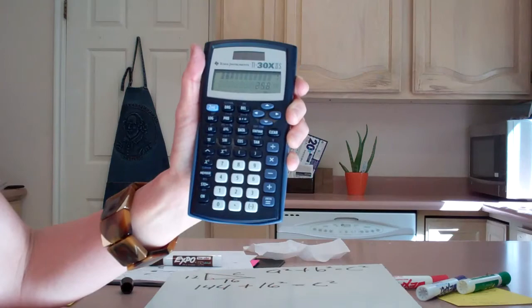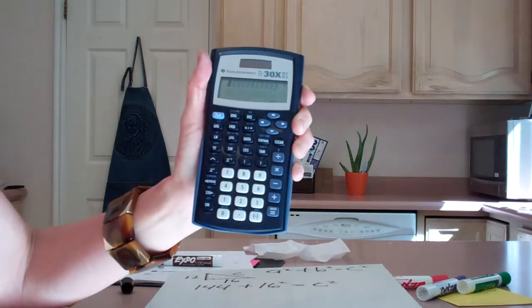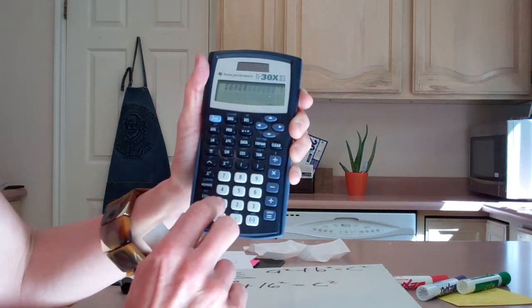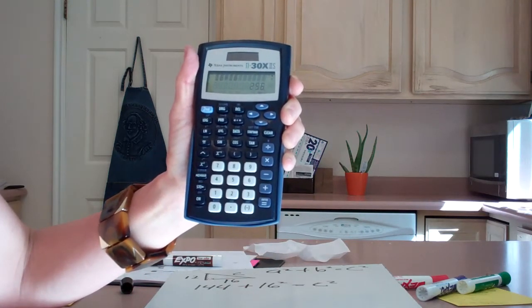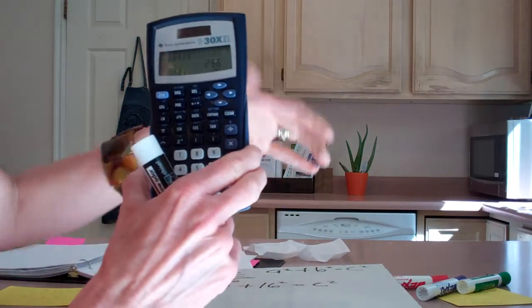If I didn't want to use the square button, I'll clear that out and just do 16 times 16—that's the same thing as 16 squared—you still get 256. Let's keep solving our problem.